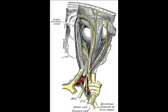The Edinger-Westphal nucleus supplies parasympathetic fibers to the eye via the ciliary ganglion, and thus controls the sphincter pupillae muscle affecting pupil constriction, and the ciliary muscle affecting accommodation. Sympathetic post-ganglionic fibers also join the nerve from the plexus on the internal carotid artery in the wall of the cavernous sinus, and are distributed through the nerve to the smooth muscle of the levator palpebrae superioris.